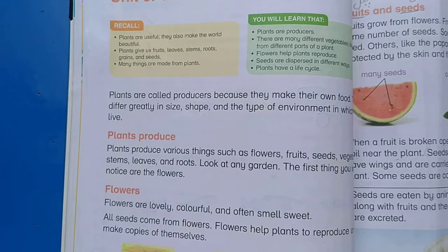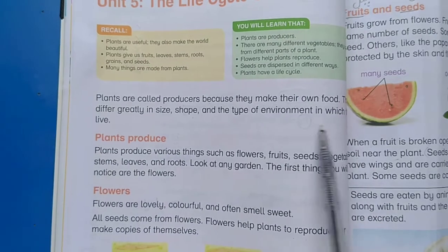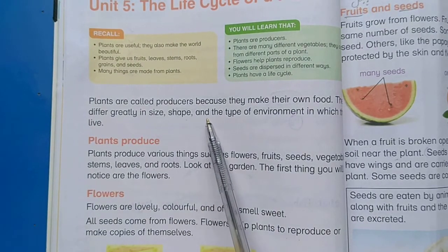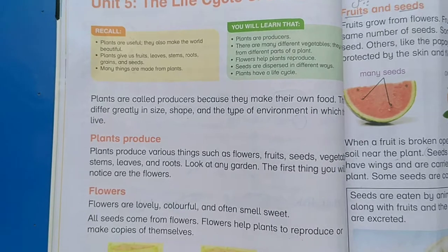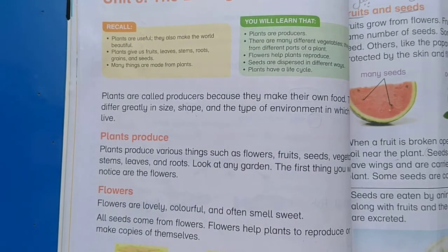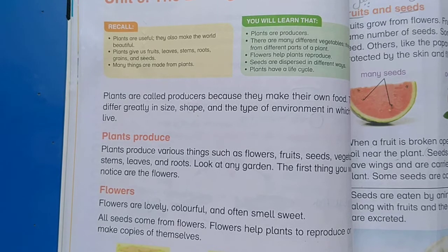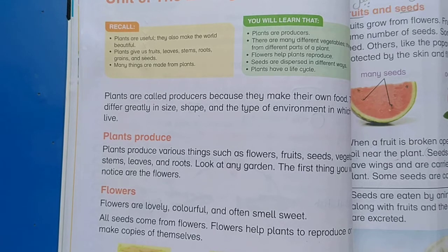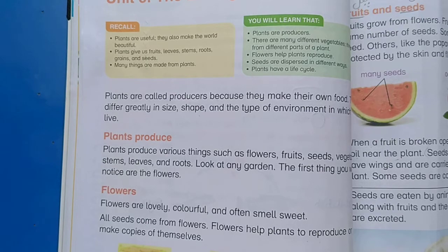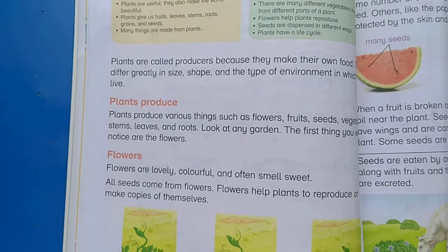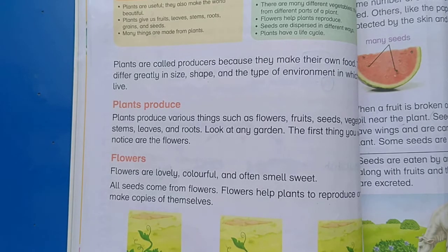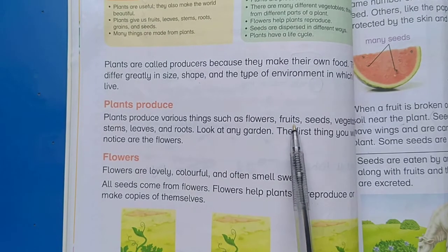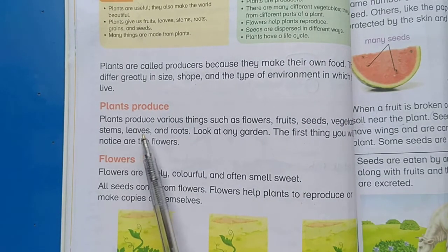Plants are called producers because they make their own food. They differ greatly in size, shape, and the type of environment in which they live. Plants produce various things such as flowers, fruits, seeds, vegetables, stems, leaves, and roots.